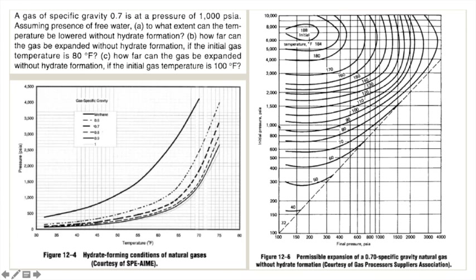For Question 2, we select the expansion chart (Category B) and locate 1000 psi on the chart, then find where the 80°F temperature curve intersects it. This intersection occurs at approximately 650 psi. So the gas can be expanded down to 650 psi; below that, gas hydrate will form. Therefore the pressure should not go below 650 psi to prevent hydrate formation.